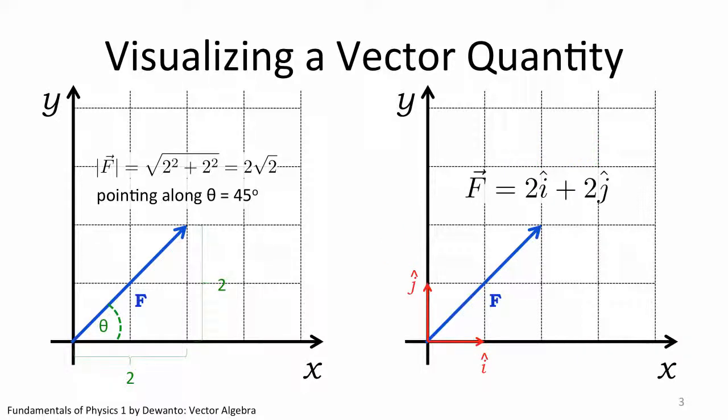Lastly, a vector can also be expressed using a column matrix such as this. It is by convention that the number on the first row refers to the component of the vector along the x-axis, and the number on the second row refers to the component of the vector along the y-axis.